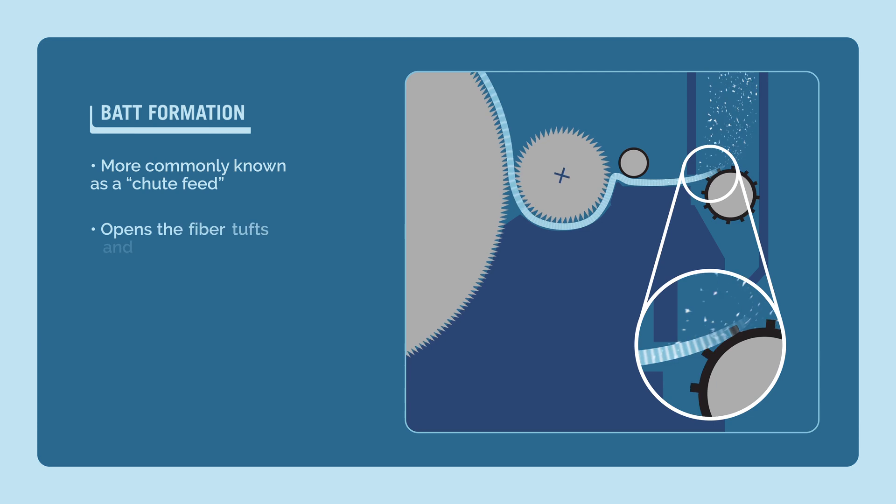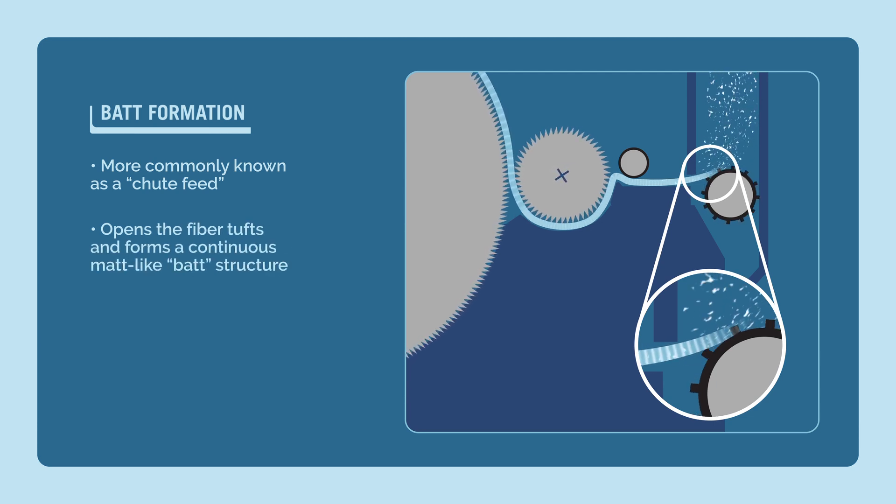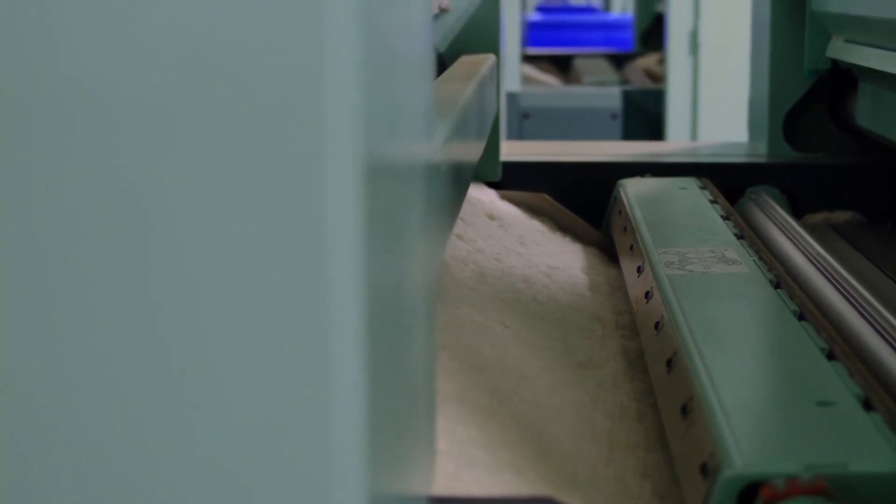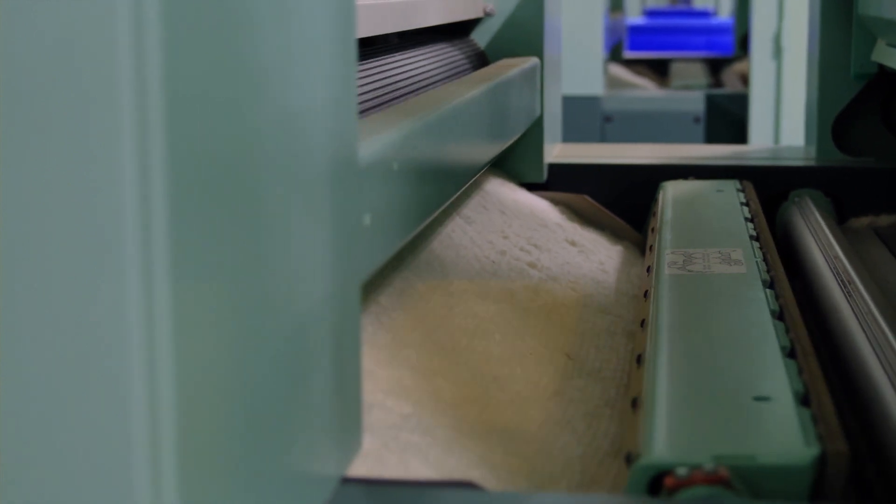The shoot feed further opens the fiber tufts and forms a continuous mat-like bat structure. This operation ensures that the carding process will receive a consistent weight of material in order that the output of the card will be as consistent and level as possible.